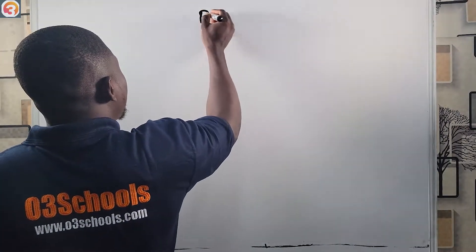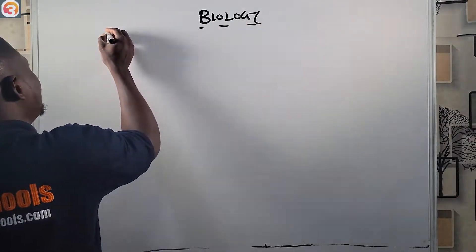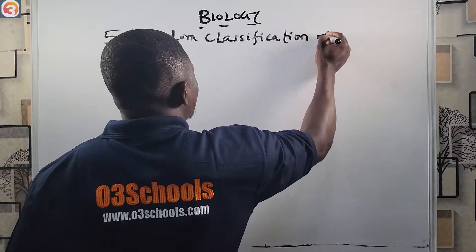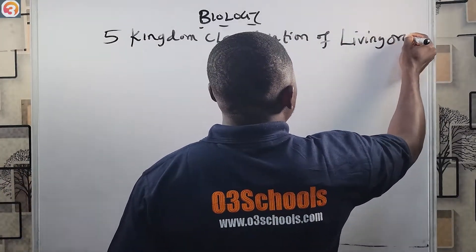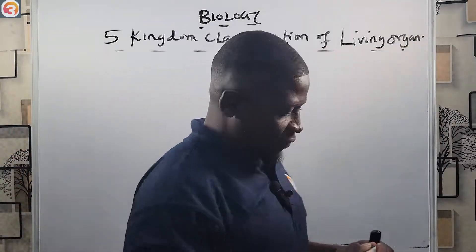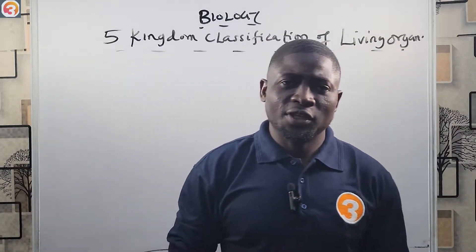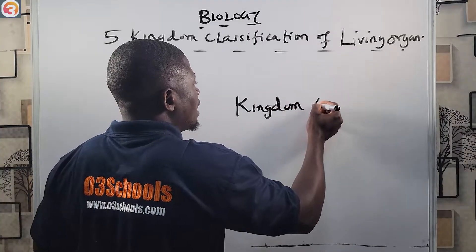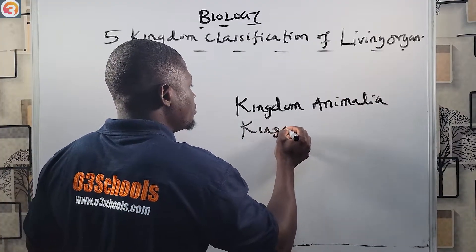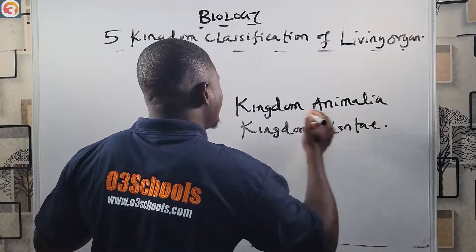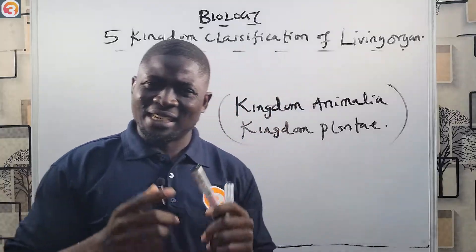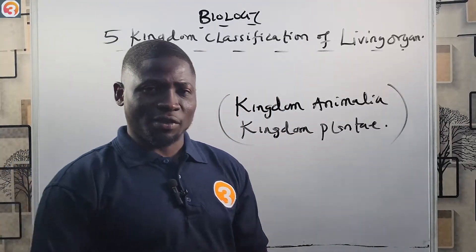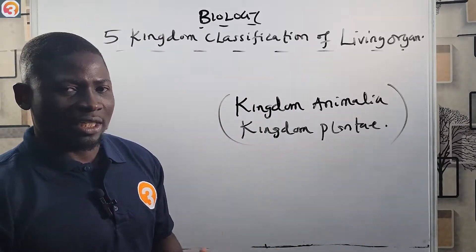Hello guys and welcome back to the biology class. Today we are going to be looking at the five kingdom classification of living organisms. In the previous episode we looked at the two kingdom classification by Carolus Linnaeus, which classified organisms into two kingdoms: Kingdom Animalia and Kingdom Plantae. But there were some drawbacks in that classification, which is why there is a more modern, more inclusive system — the five kingdom classification of living organisms.